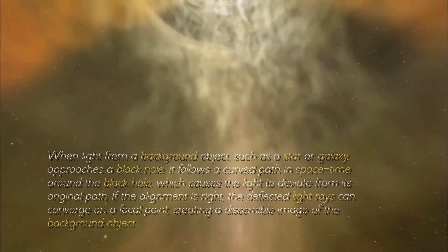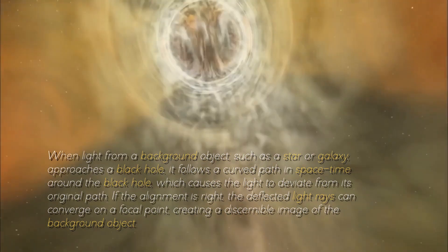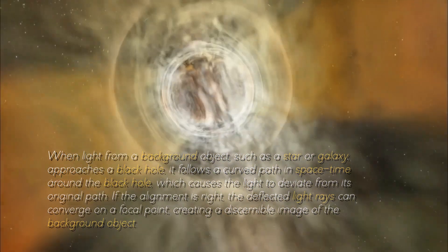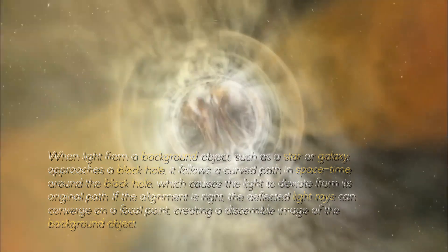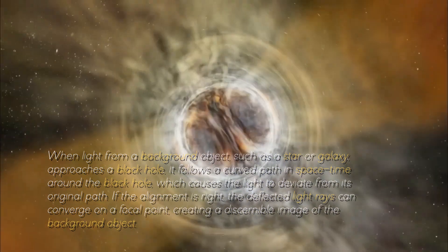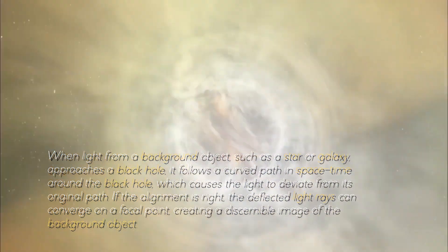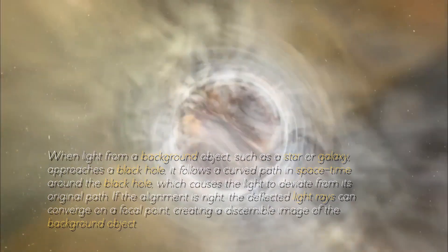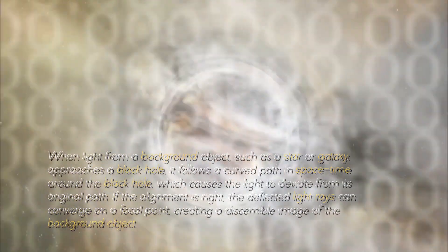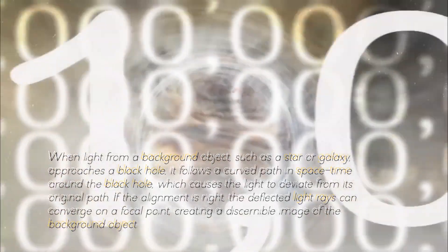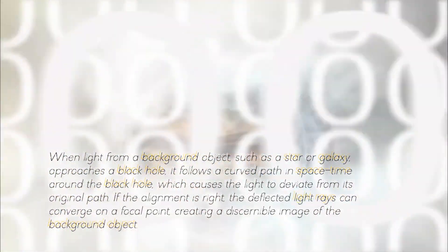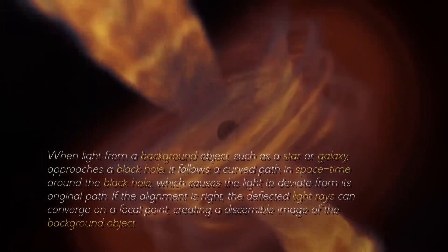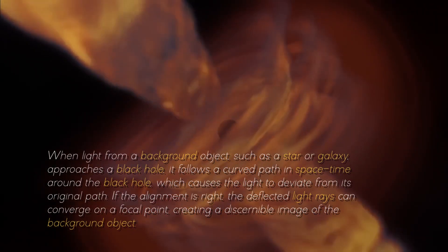When light from a background object, such as a star or a galaxy, approaches a black hole, it follows a curved path in spacetime around the black hole, which causes the light to deviate from its original path. If the alignment is right, the deflected light rays can converge on a focal point, creating a discernible image of the background object.